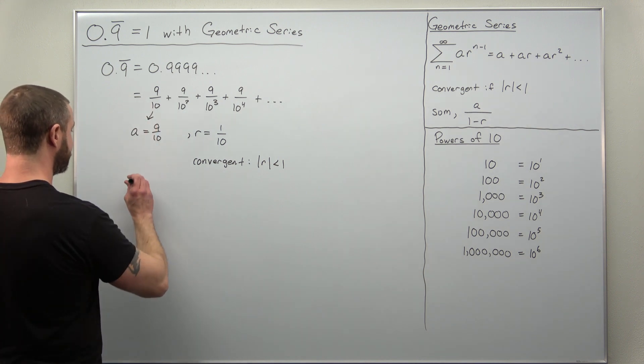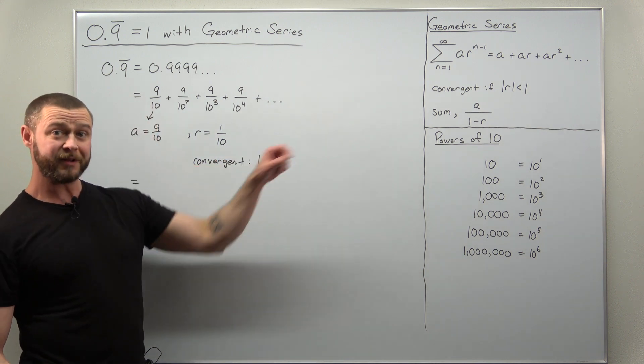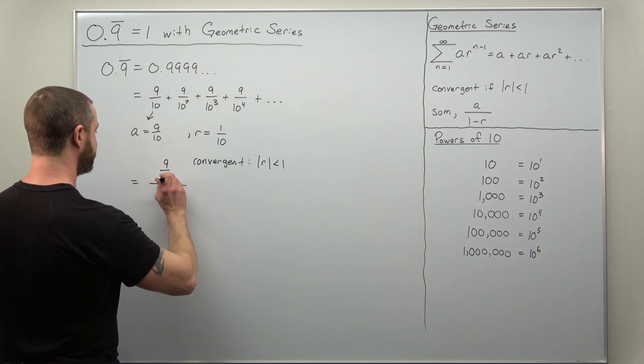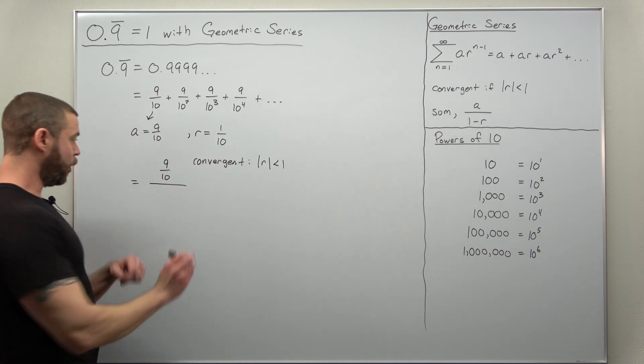So we're just going to plug everything in to the sum formula. A divided by 1 minus R. We have A as 9 over 10. R is 1 over 10.